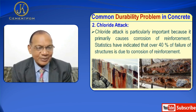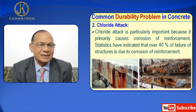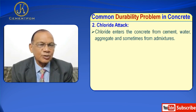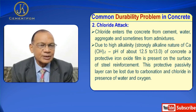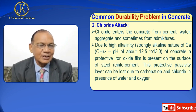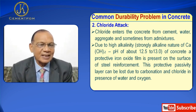Now I will talk about chloride attack. Chloride attack is particularly important because it primarily causes corrosion of reinforcement. Statistics have indicated that over 40% of failures of structures are due to corrosion of reinforcement. Chlorides enter the concrete from cement, water, aggregates, and sometimes from de-icers. Due to the high alkalinity — the strong alkaline nature of calcium hydroxide with pH of about 12.5 to 13 — a protective iron oxide film is present on the surface of steel reinforcement. This protective passivity layer can be lost due to carbonation and chlorides in the presence of water.